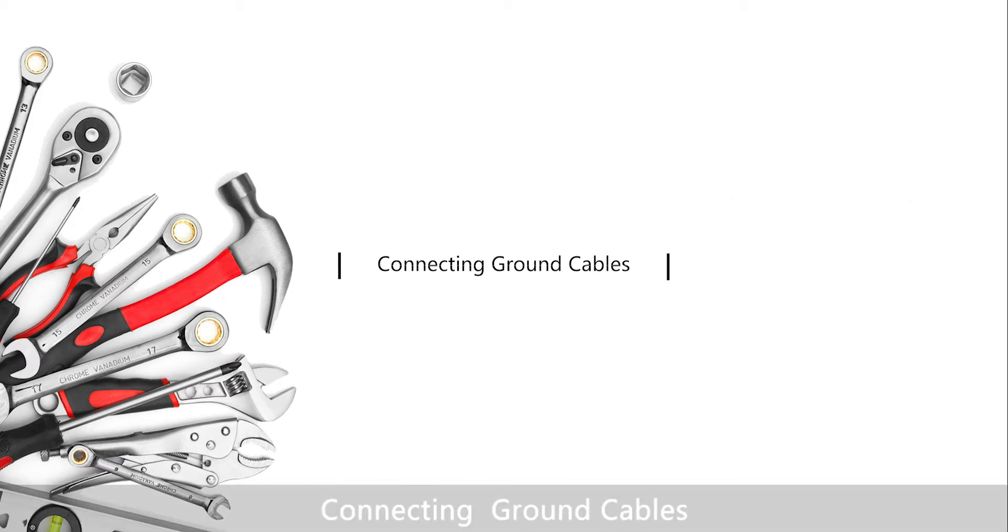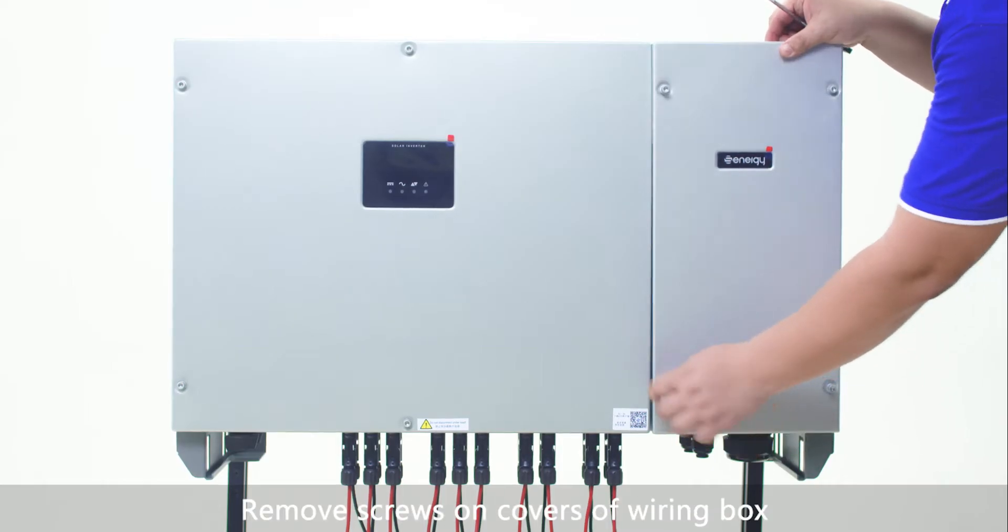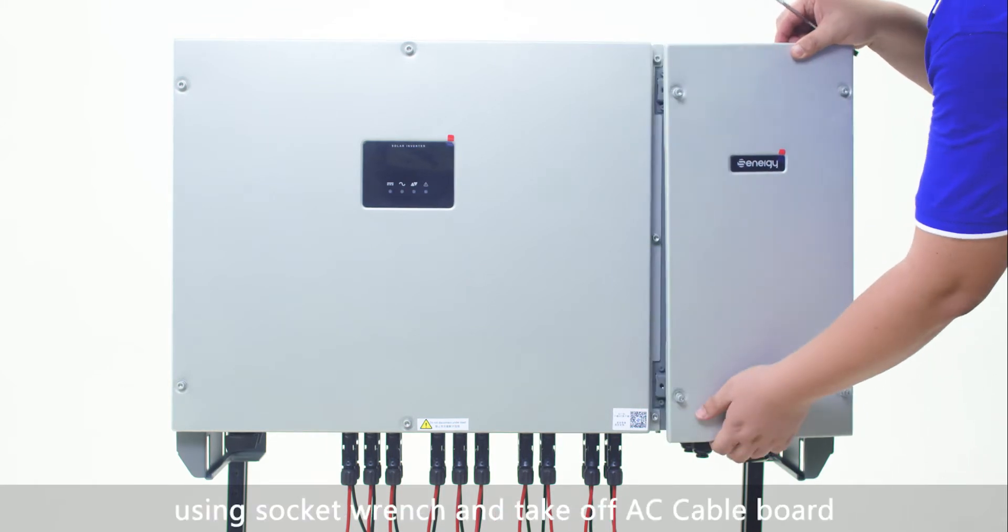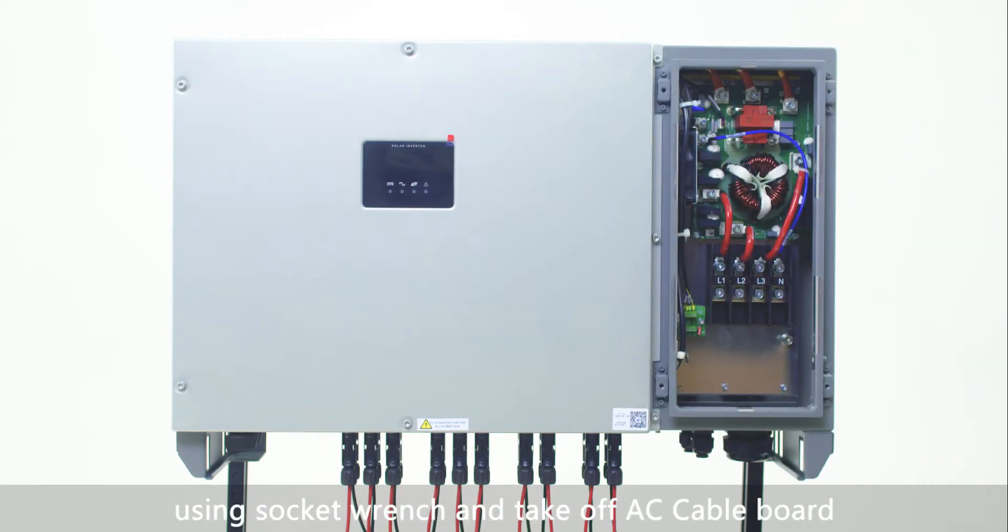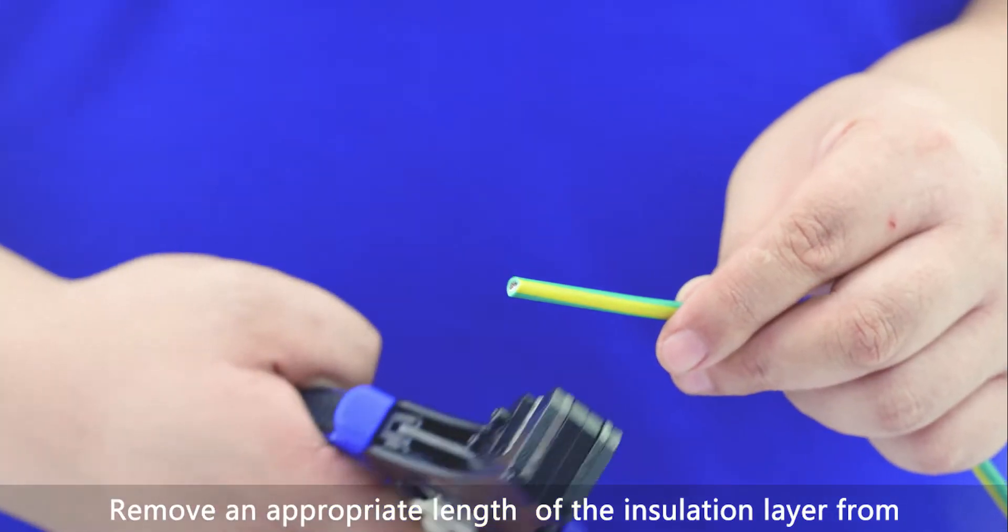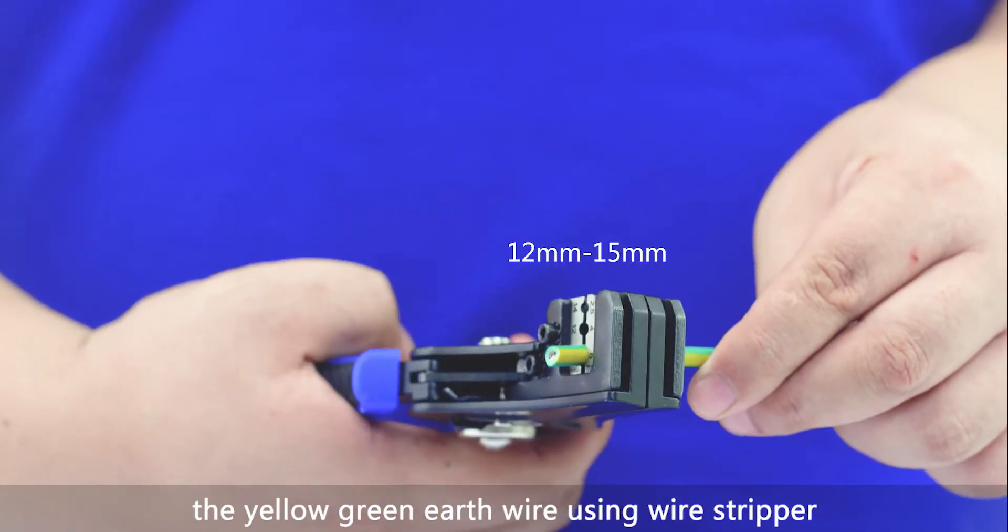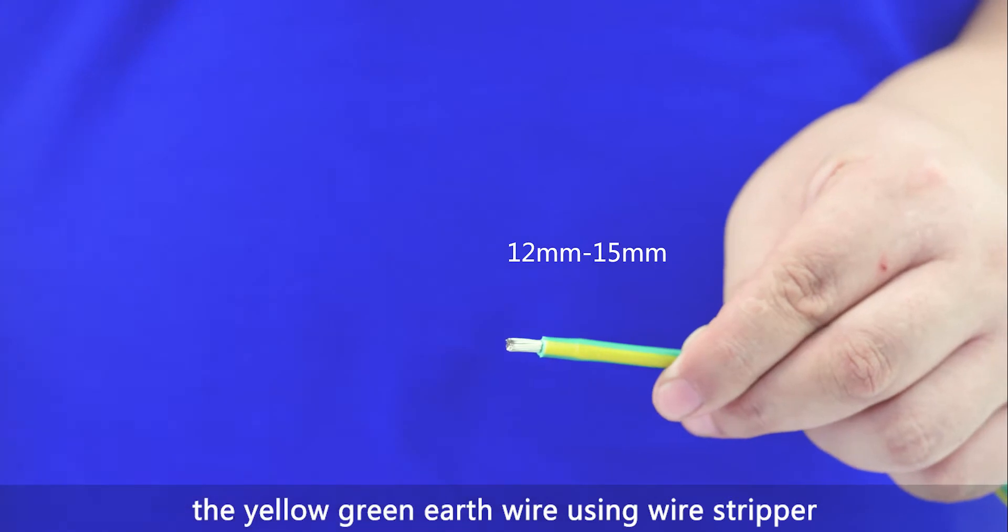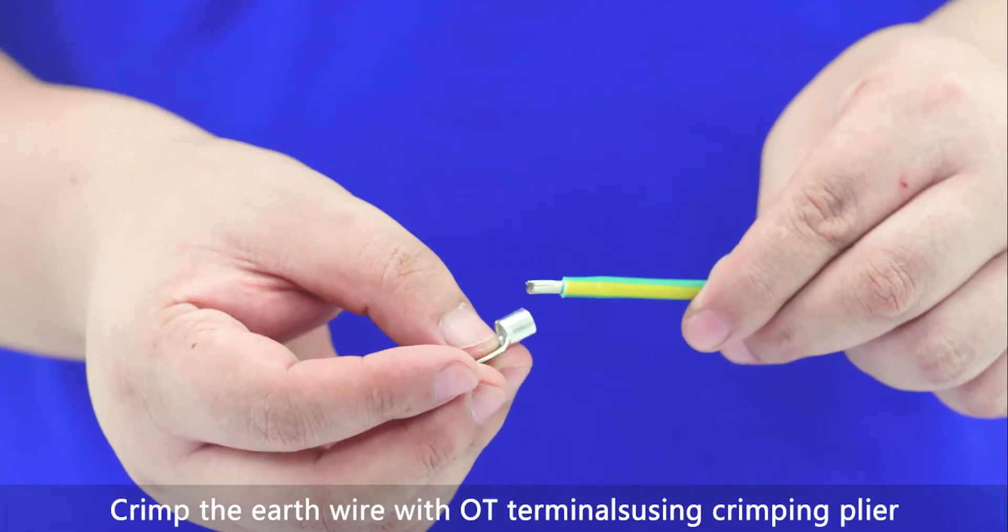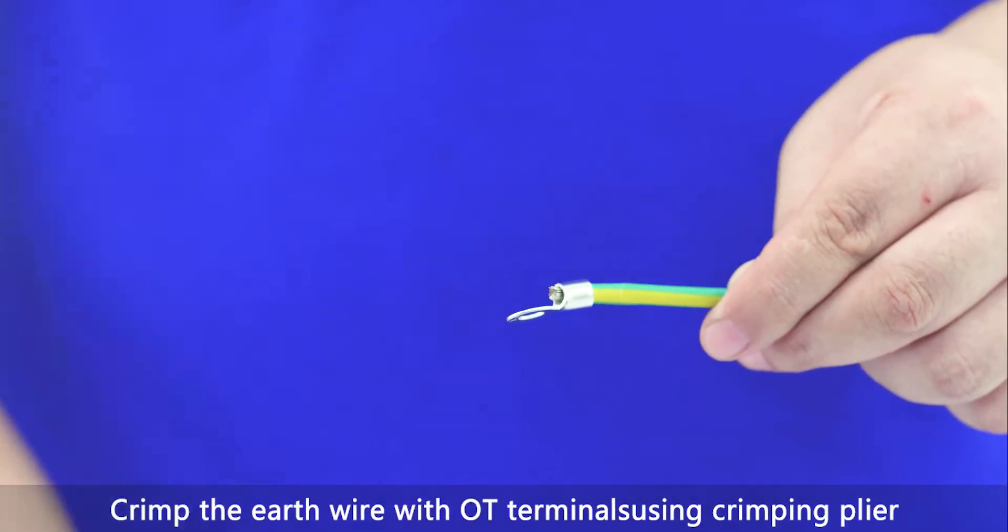Connecting ground cables. Remove screws on covers of wiring box using socket wrench and take off AC cable board. Remove an appropriate length of the insulation layer from the yellow-green earth wire using wire stripper. Crimp the earth wire with OT terminals using crimping plier.